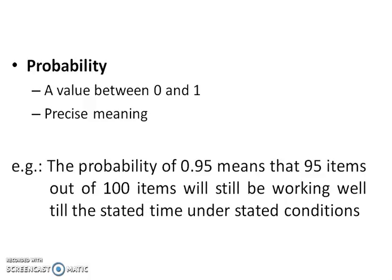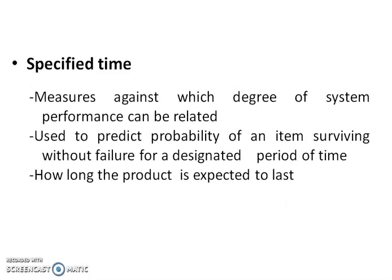Probability of 0.95 means 95 items out of 100 items will still be working well till the stated time under stated condition. The specified time is measured against which degree of system performance can be related.